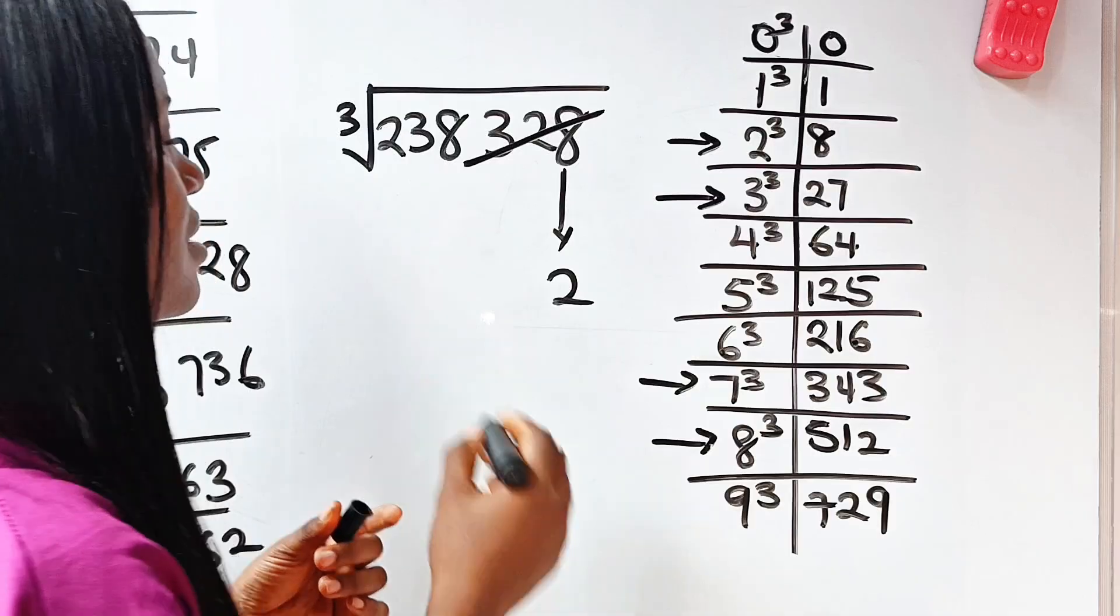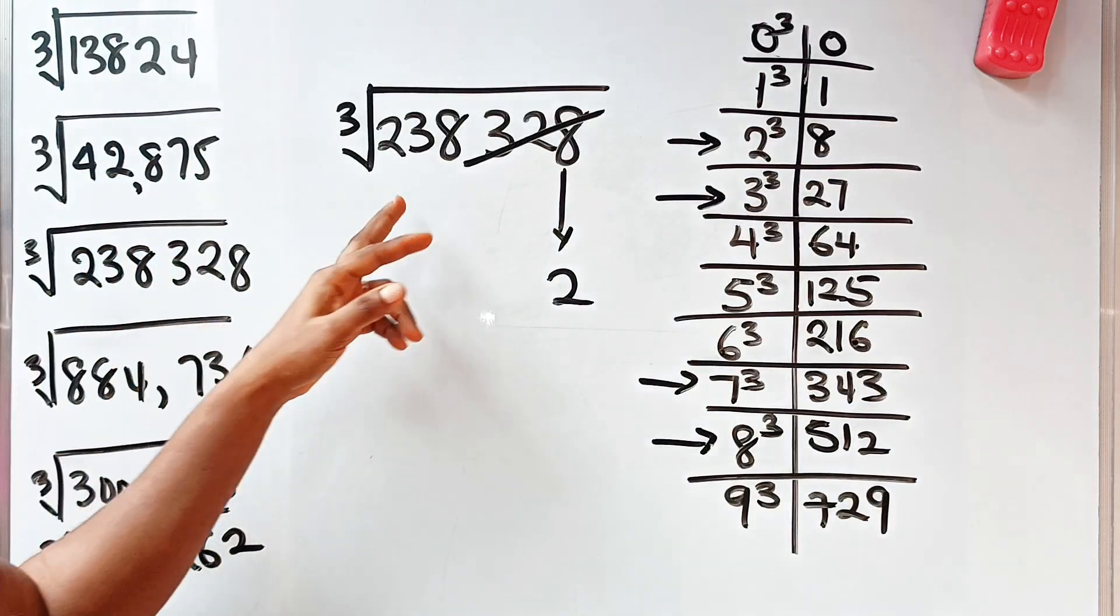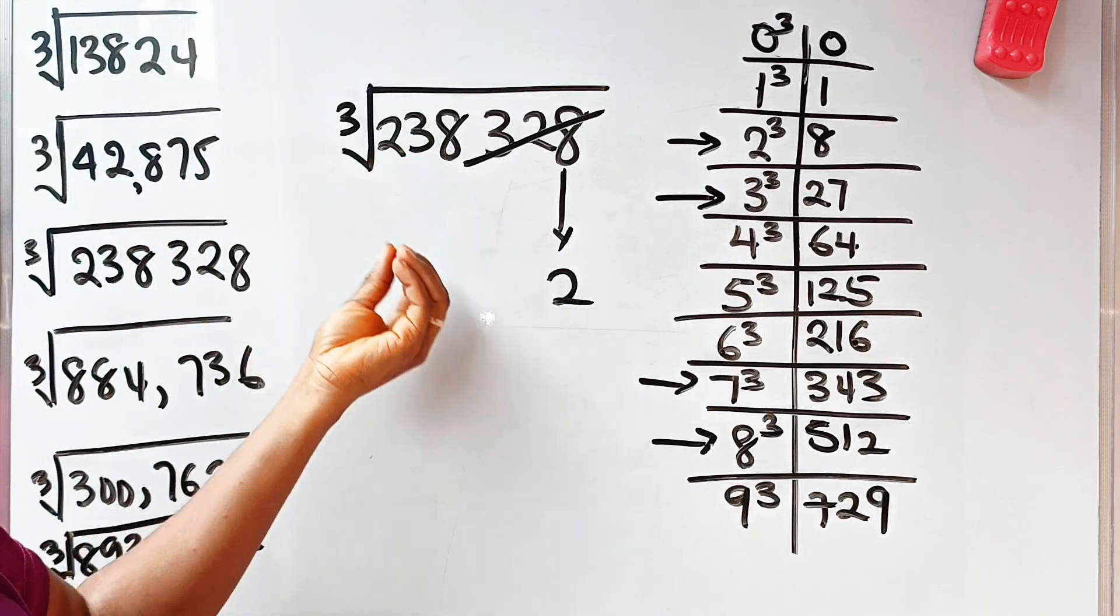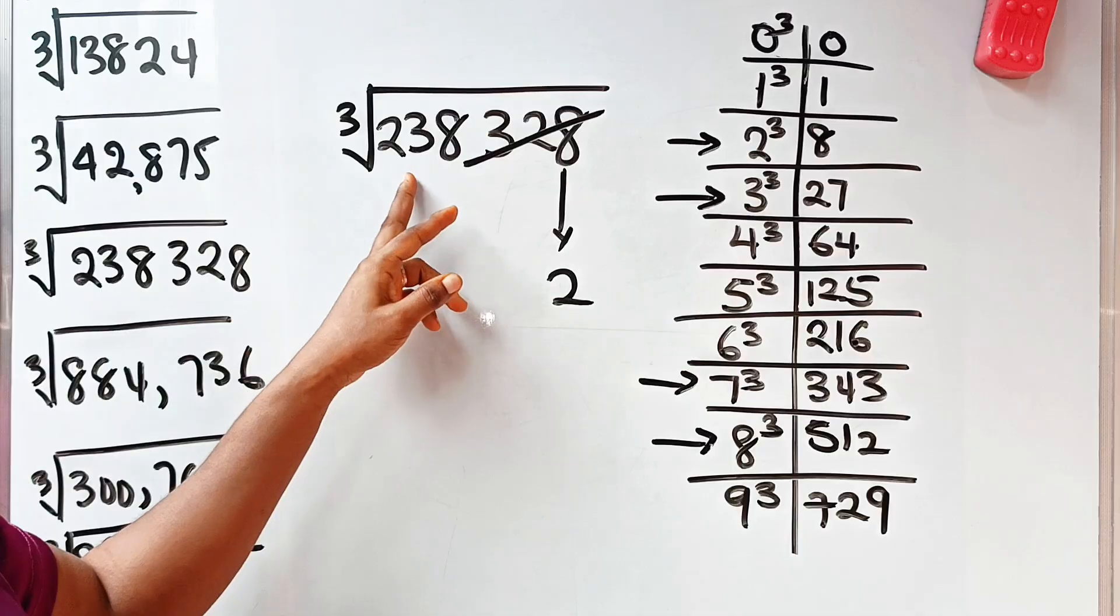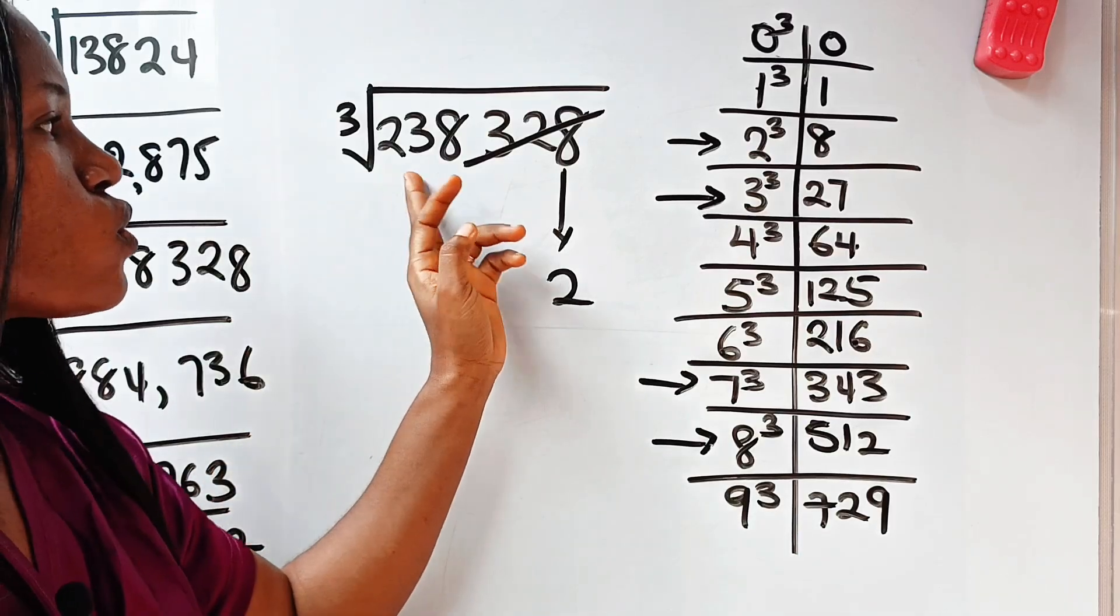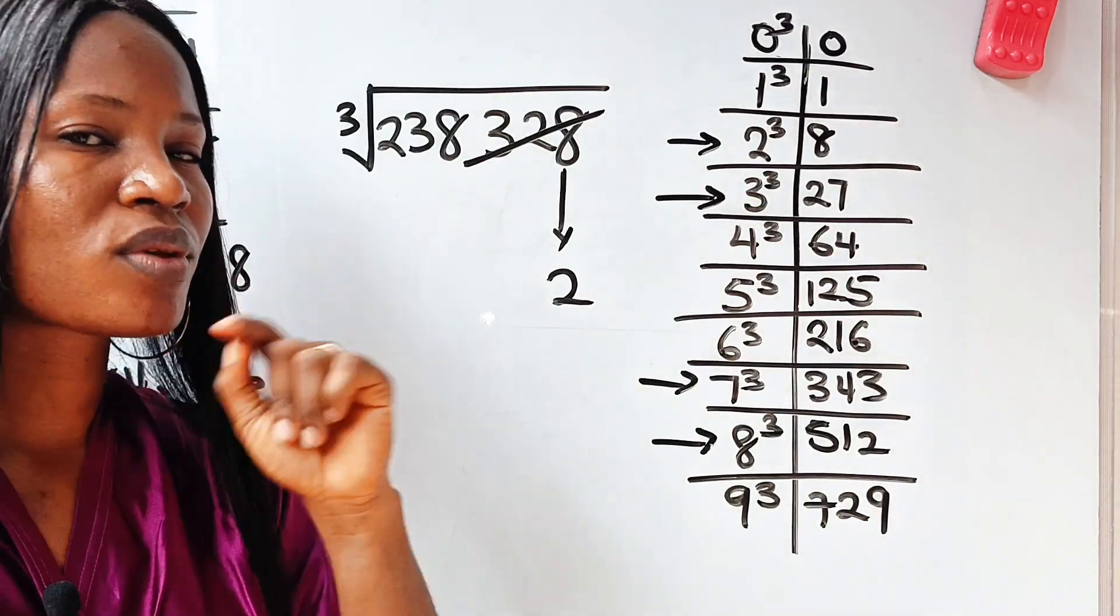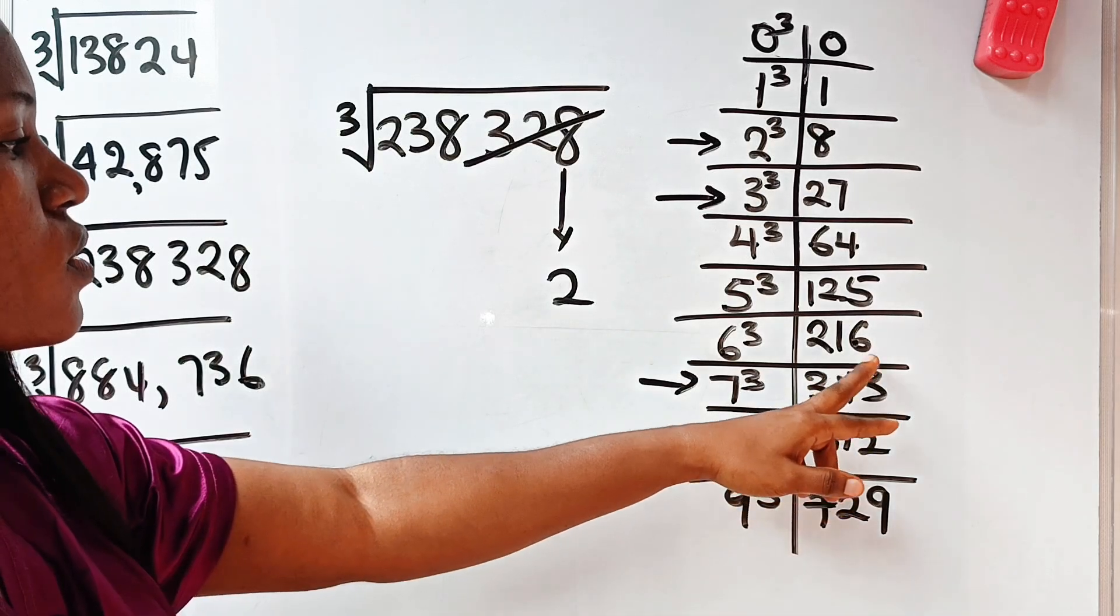So if we cancel the last 3 digits, now we have 238. Which number will you cube to get a number that is close to 238, but not more than 238? And that should be what?